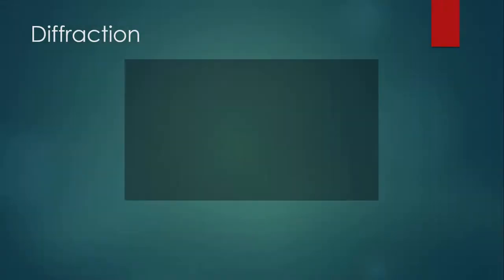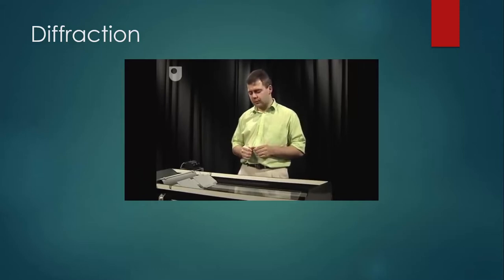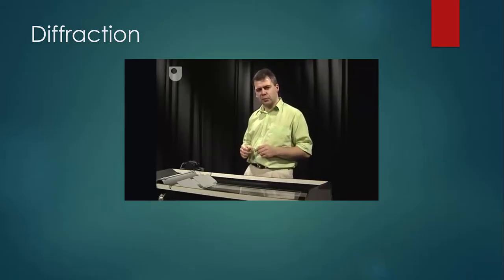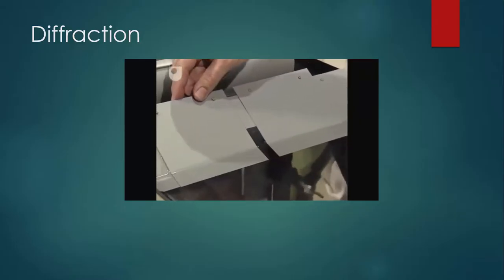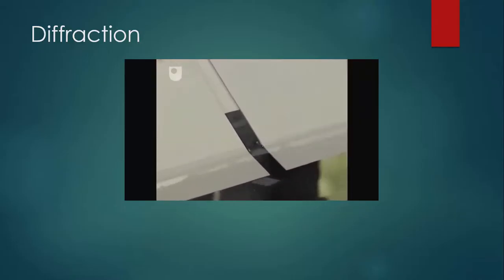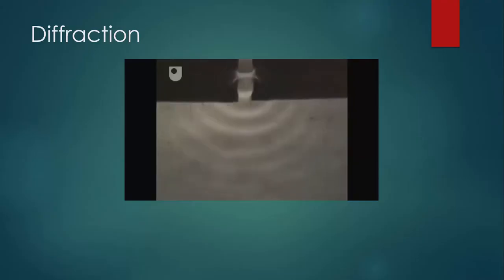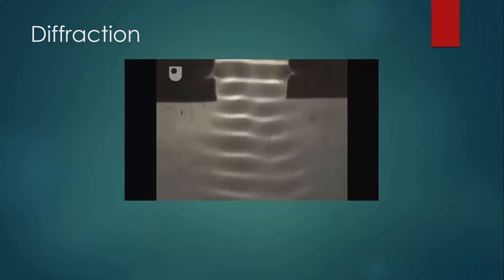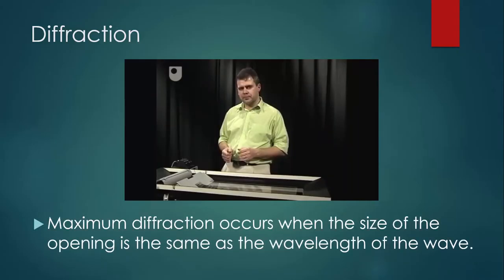Listen to what this guy has to say about diffraction. So what do you think controls how much the wave spreads out? Well, one possibility is the width of the aperture. And what do you think would happen if I made the aperture smaller? Well, you might be surprised to learn that a narrower aperture leads to more spreading out of the wave, more diffraction. If instead, I make the aperture wider, then after it's settled down, you can see that the wave becomes less spread out. The diffraction is less pronounced. So maximum diffraction occurs when the size of the opening is the same as the wavelength of the wave.